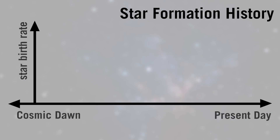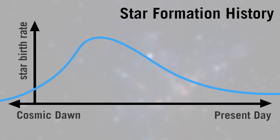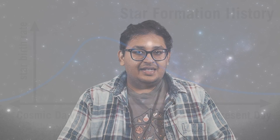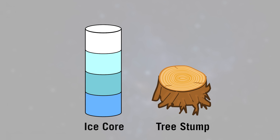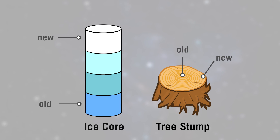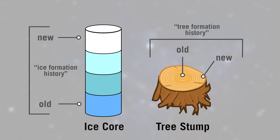The star formation history is a record of how a galaxy formed its stars over cosmic time, starting from the Big Bang all the way up to the time when we observe these galaxies. The reason we study these is for much the same reasons that we study ice cores in the Arctic Caps or the rings in ancient trees — to understand how they formed and to get context on all the things that affected their growth over time.